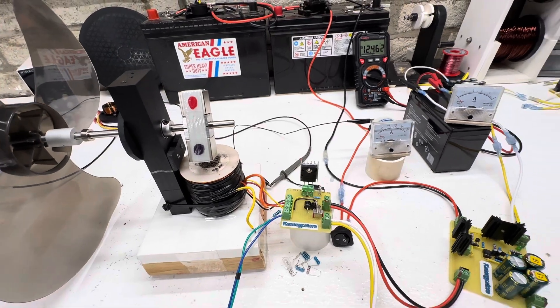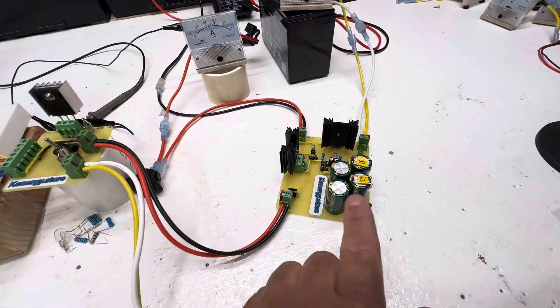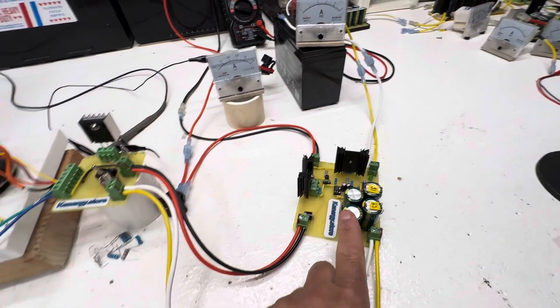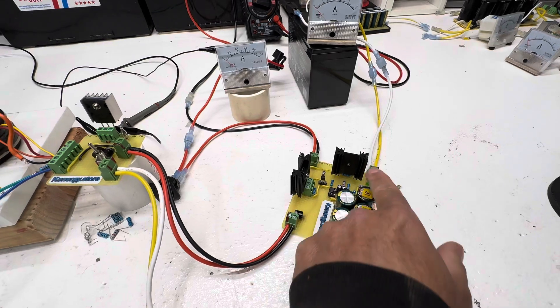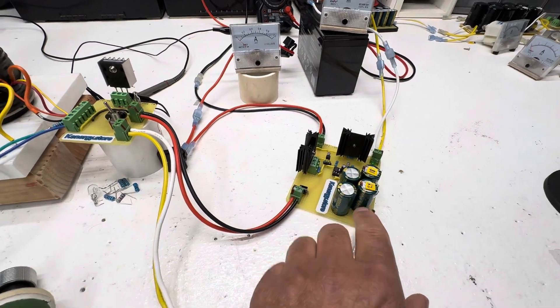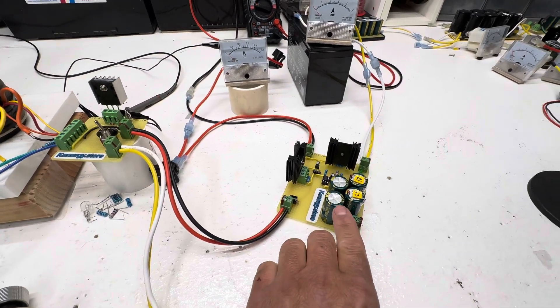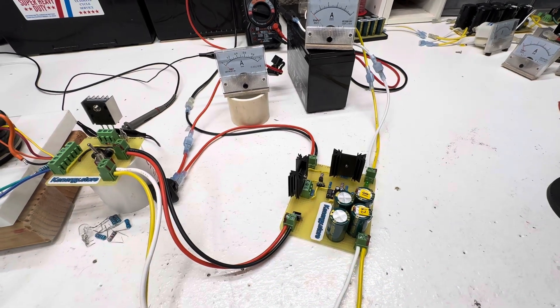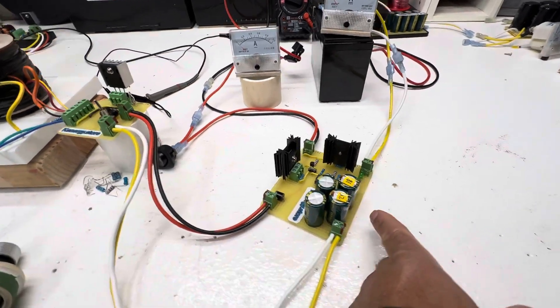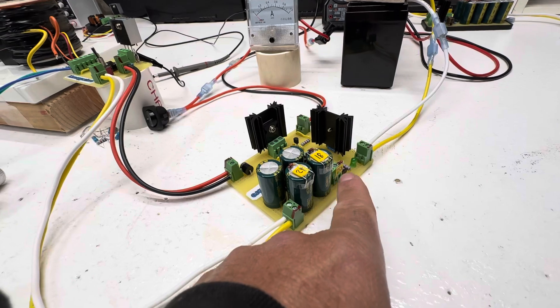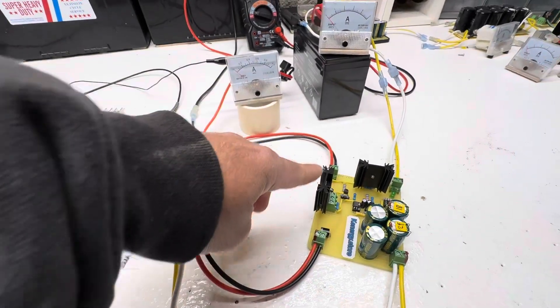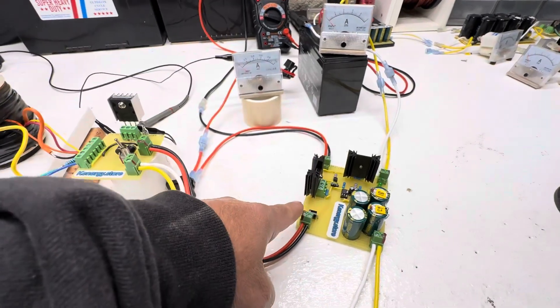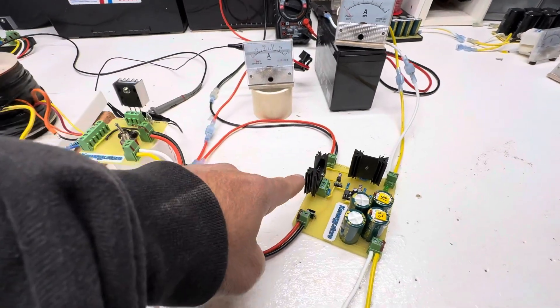For those of you that follow my channel, you've seen this before, but for those of you that are new, this is a cap dump on the side. It's four 10,000 microfarad capacitors in parallel with an 18-volt trigger. We've got a 20-volt trigger on it right now.